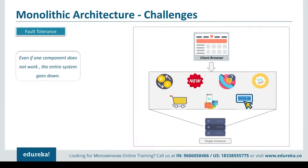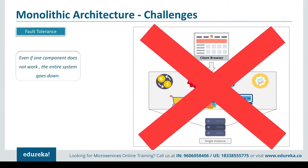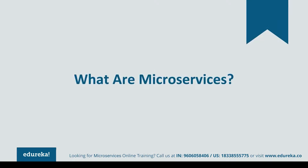Let us now look into the third challenge which is fault tolerance. Consider your shopping cart application — suppose even if one feature of the application doesn't work, then the entire system goes down. This not only creates a problem for the users but also creates a problem for the developers as they have to rebuild it again. So, to avoid these challenges, developers decided to shift from monolithic architecture to microservices.